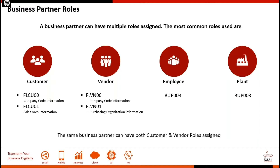For example, if you want to extend a business partner to only company code, then we have to use FLCU00. And if you want to extend only for the sales area, then it's going to be 01. But basically we used to extend to both transactions, which is XD and FT. So those roles determine the company code information and also sales area information.